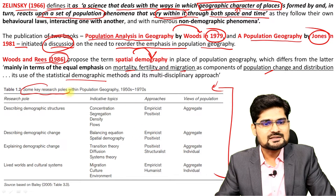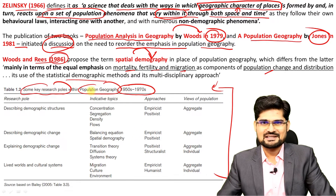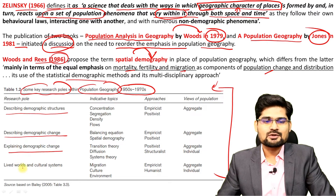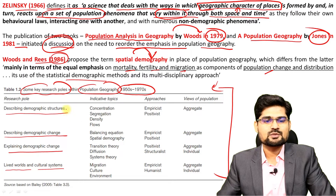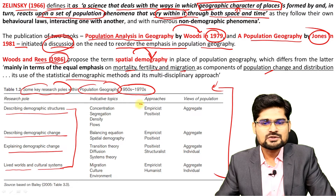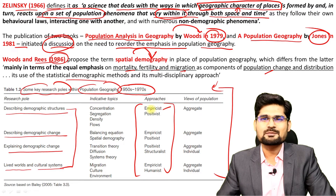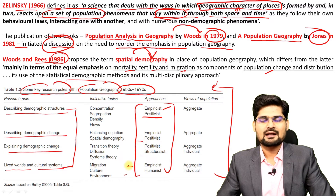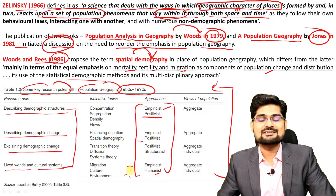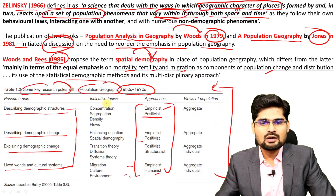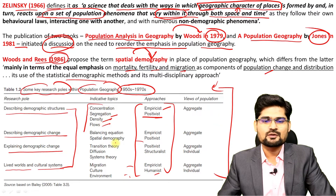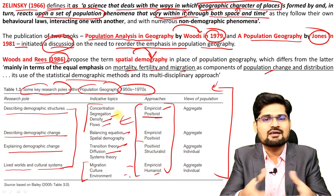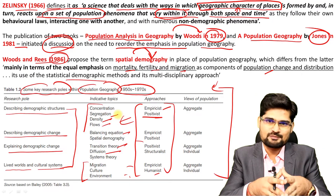Some key research poles in population geography between the 50s and 70s included: describing demographic structure, describing demographic change, explaining demographic change, and lived worlds and cultural systems as major themes. Most of the approaches were empiricist, direct observation, aggregation, and positivistic, dominating until the 1970s — not so much the humanist approach. All theories of concentration, segregation, density, flows, balancing, transition theory, and diffusion models were dominating in population geography in the first half as the inherent building blocks of population geography.